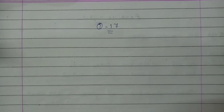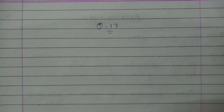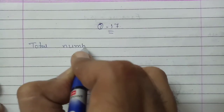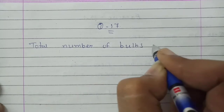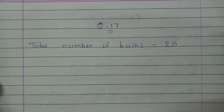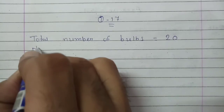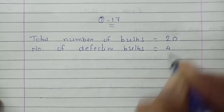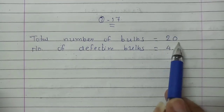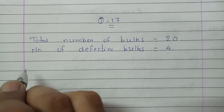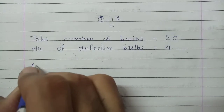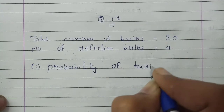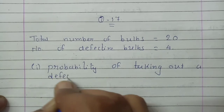Let us solve it. As given in the question, the total number of bulbs is 20. Out of these 20, 4 bulbs are defective. We draw one bulb randomly and have to find the probability that the bulb drawn is defective.